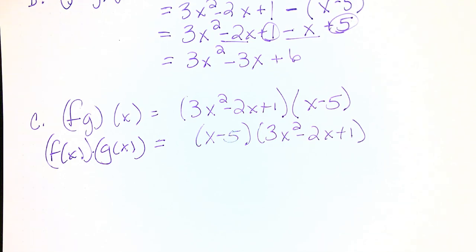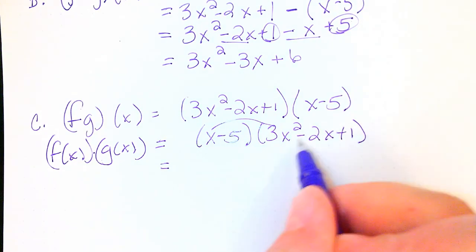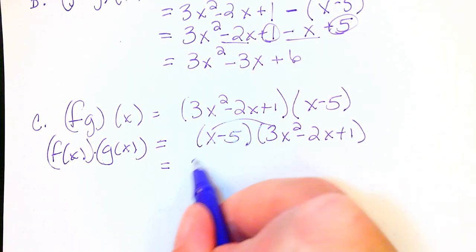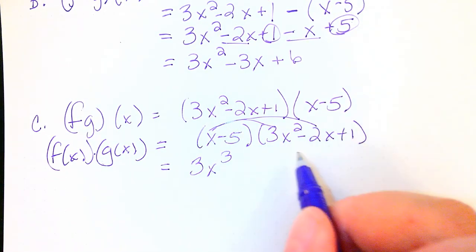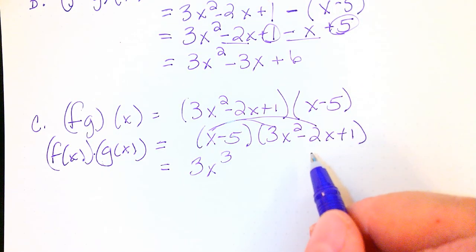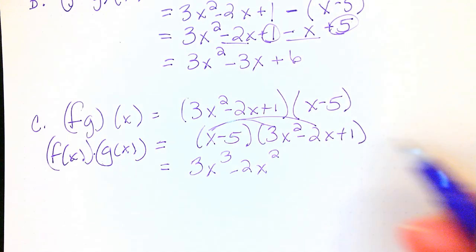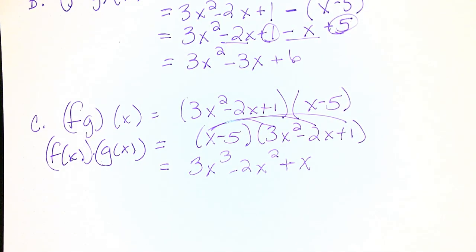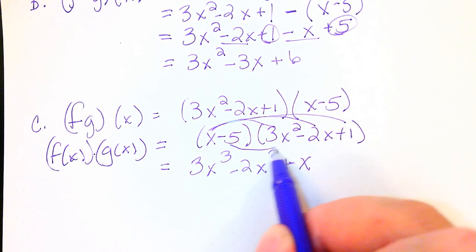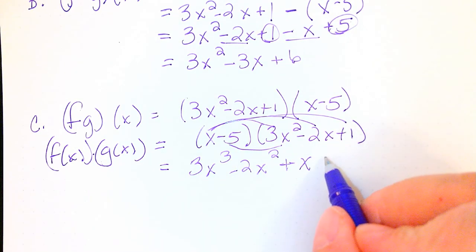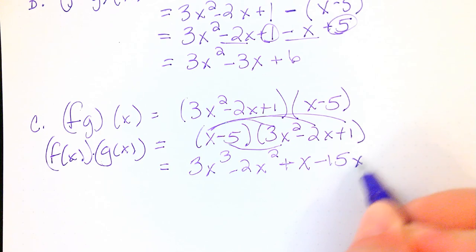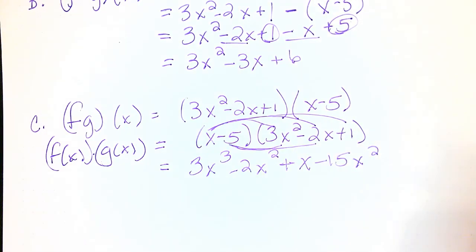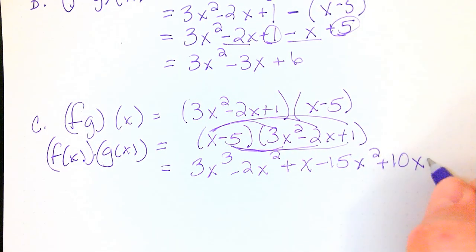Now we're going to perform distributive property on this problem. So we're going to distribute the x times each term. x times 3x² is 3x³. x times -2x is -2x². x times 1 is just 1x, which is x. Now we're going to multiply the -5 times each term. So -5 times 3x² is -15x². -5 times -2x is +10x and -5 times 1 is -5.